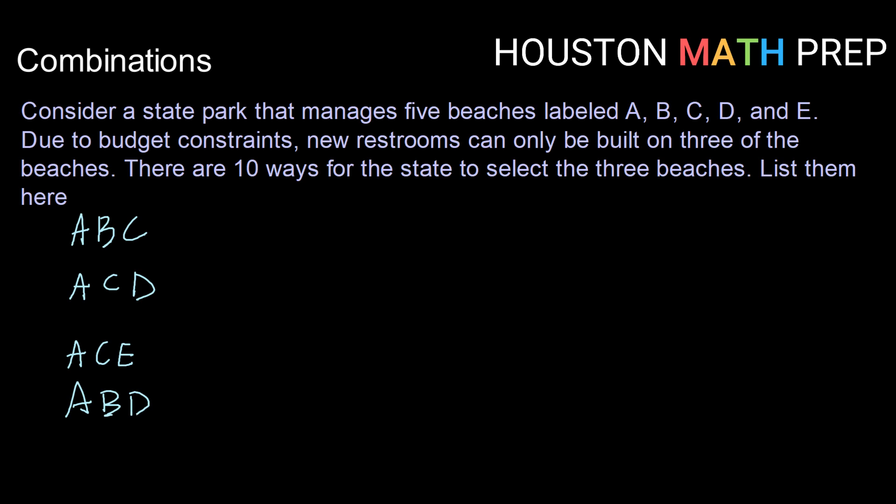A, B, D is an arrangement. A, B, E. A, D, E. And in that way, our first five, we've gotten all of the ways that A can be included.